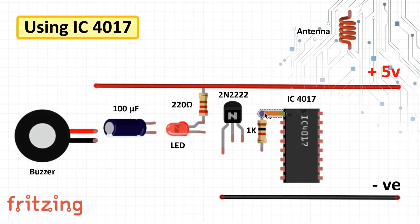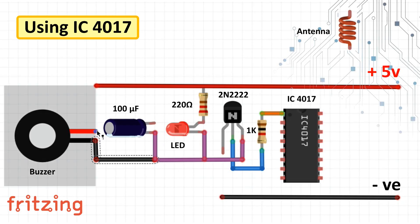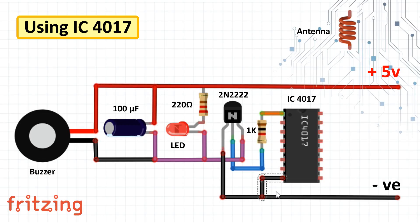Connect pin number 1 of the IC to the 1K resistor. The other end of the resistor connects to the base of the transistor. Next connect the collector pin to the negative legs of the LED, transistor and the buzzer. The positive legs connect to the positive rail of the circuit board. The negative rail connects to the emitter, pin number 8, pin number 13 and pin number 15 of the IC. The antenna is connected to pin number 14 which is the clock input pin.